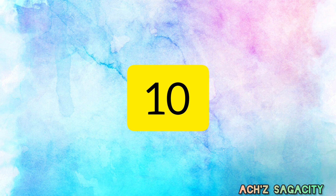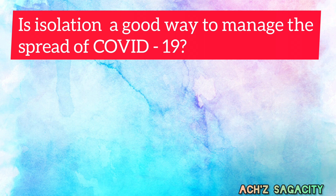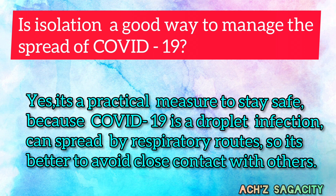The tenth question: Is isolation a good way to manage the spread of COVID-19? Yes, it's a practical measure to stay safe because COVID-19 is a droplet infection that can spread by respiratory routes. So it's better to avoid close contact with others — especially those who are showing symptoms related to coronavirus like coughing, sneezing, and breathing difficulty.